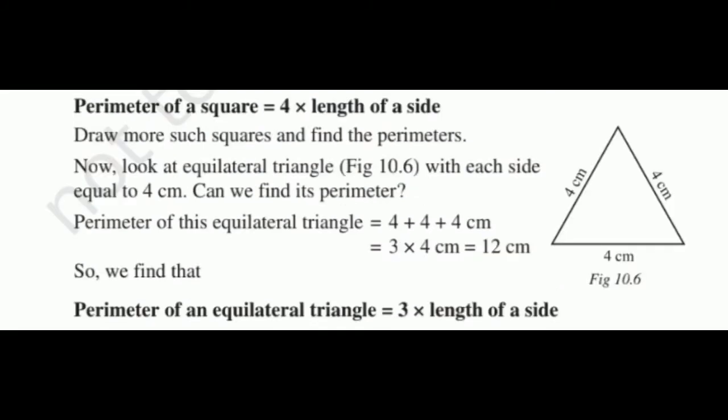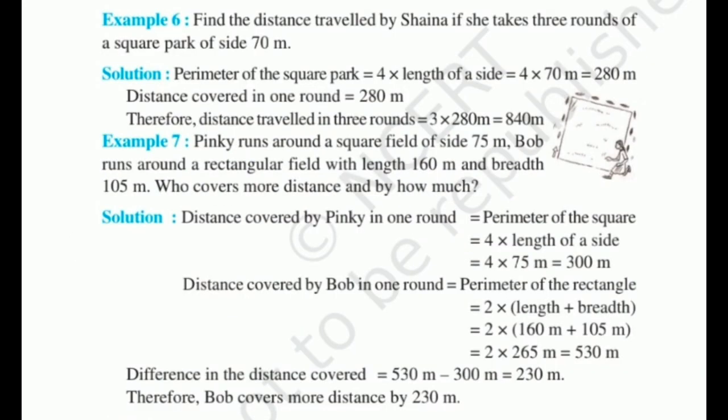Perimeter of a square is 4 into the length of a side. For an equilateral triangle with each side equal to 4 centimeters, the perimeter is 3 into 4 centimeters, so the perimeter of an equilateral triangle is 3 into the length of a side. Example: Sina takes 3 rounds of a square park of side 70 meters. Perimeter is 4 into 70, which equals 280 meters. Distance in 3 rounds is 3 into 280, which equals 840 meters.